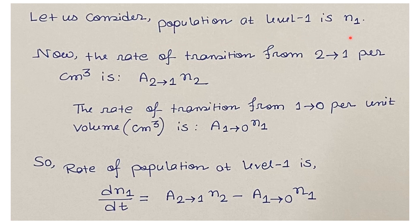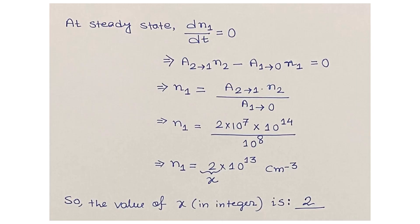Let the population at energy level 1 be n₁. The rate of transition from level 2 to level 1 per cm³ is A₂₁ × n₂, and the rate of transition from level 1 to level 0 per cm³ is A₁₀ × n₁. Therefore, the rate of change of population at level 1 is: dn₁/dt = A₂₁·n₂ − A₁₀·n₁. At steady state, dn₁/dt = 0, so A₂₁·n₂ − A₁₀·n₁ = 0.